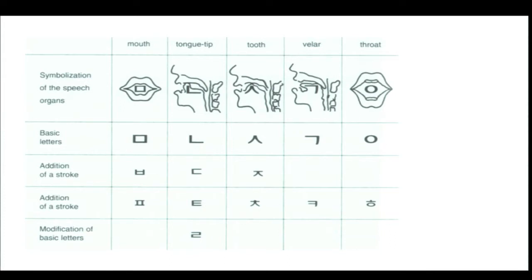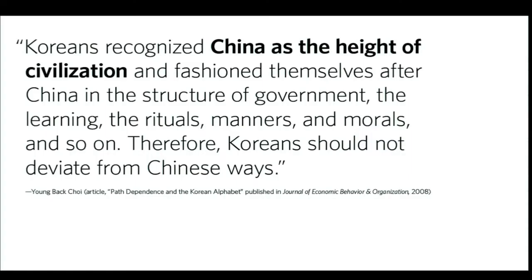Despite these truly innovative design features and its ease to learn and use, the powerful ruling class protested the new alphabet. An alphabet easy to learn threatened their elevated status in society. High-level officials protested the alphabet saying it was barbaric. One particular official argued that Koreans recognized China as the height of civilization and fashioned themselves after China in the structure of government, the learning, the rituals, manners, and so on — therefore Koreans should not deviate from Chinese ways.